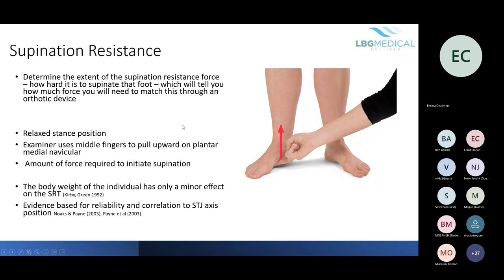Supination resistance: this determines the extent of the supination resistance force — how hard it is to supinate the foot — which tells you how much force you are likely to need from an orthotic device. In a relaxed stance position, the examiner uses the middle fingers to pull upwards on the plantar medial navicular, feeling how much force is required to initiate supination. A high supination resistance force means it is very hard to get the foot into supination, whereas a low force means it is easy.